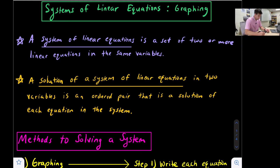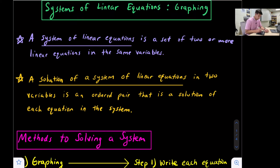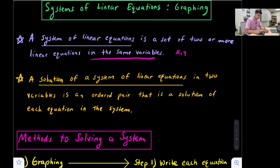We'll start off talking about what is a system of linear equations. It's a set of two or more linear equations in the same variables. That just means the two equations have the same variables — most often we're looking at x and y.